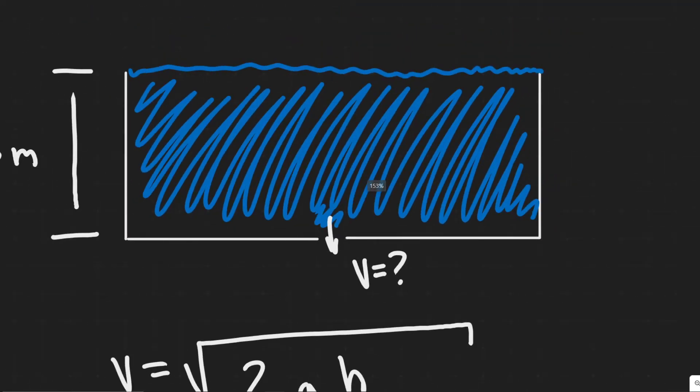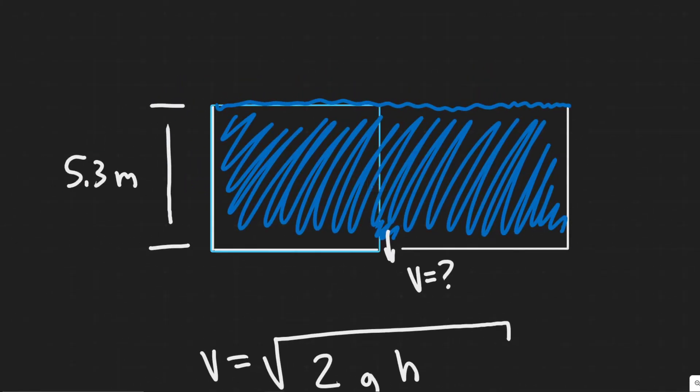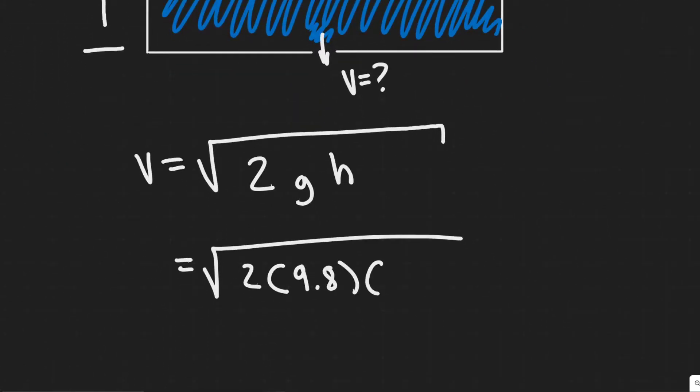So we know it's at the bottom of the tank and the free surface is right here. So the distance between these two they tell us is 5.3 meters. So h is just going to be 5.3.